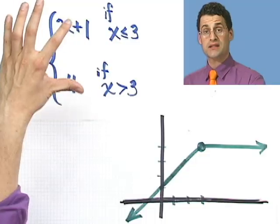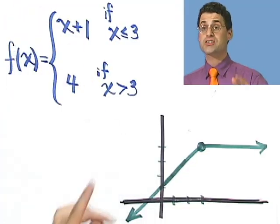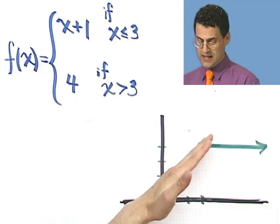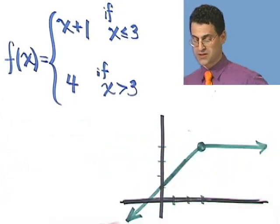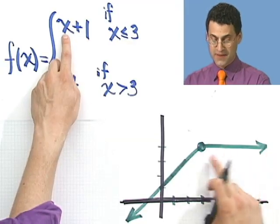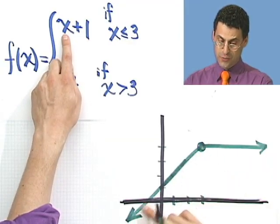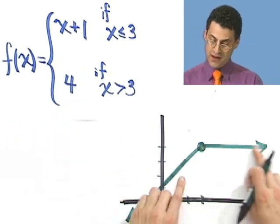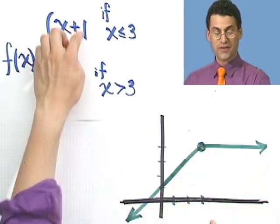So this piecewise defined function actually has a graph that looks like this thing, and then it sort of sharp turns to the right, and I've got this constant function. The constant function is given by this, and this is a line function that has slope 1 and intercept 1. So again, you can see how there's a break in the action usually where the thing splits.